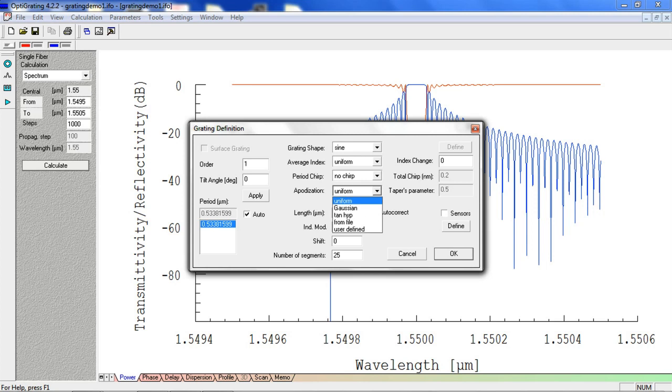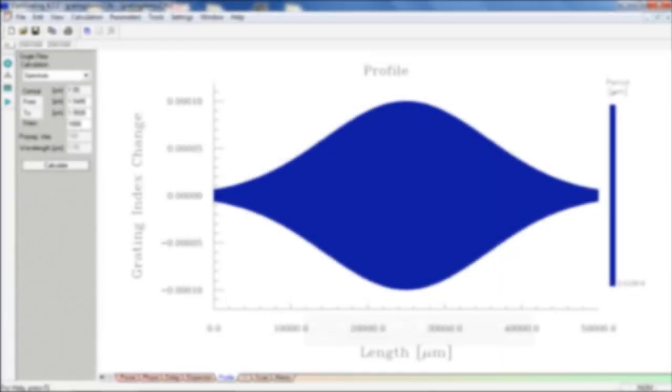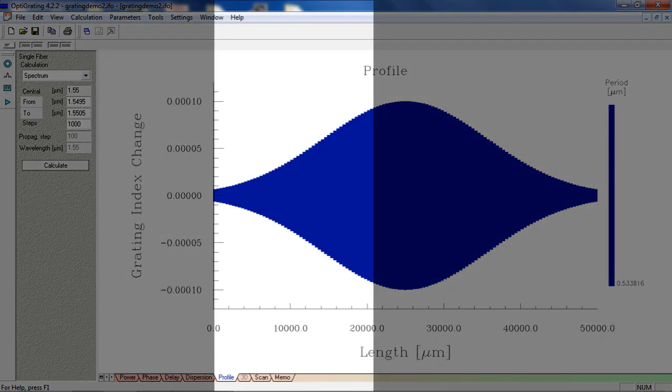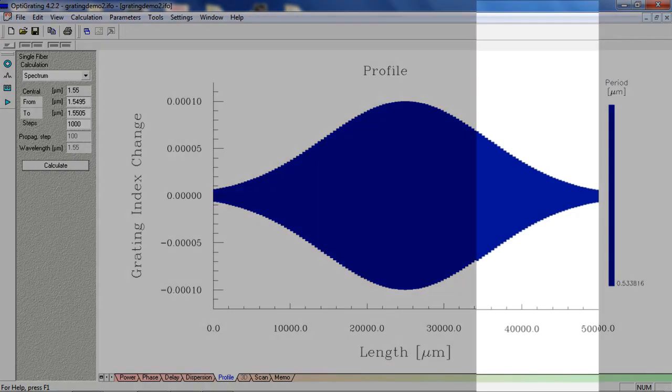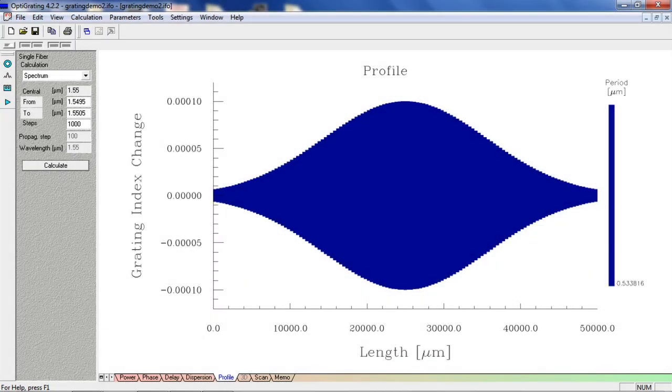Under apodization, select Gaussian to see an example of Gaussian apodization. This grating is made to have small amplitude at the beginning, and become stronger in the middle, and then weak again at the end. This changes the transmission spectrum dramatically.